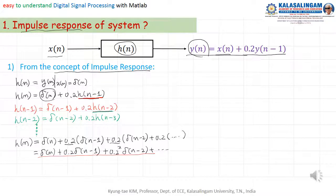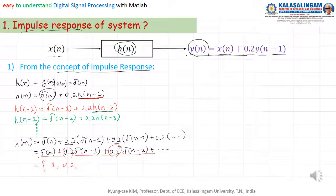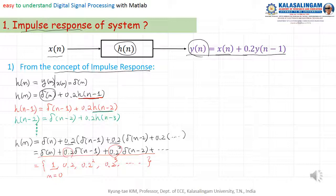We can also represent the sequence. It means: 1, 0.2, 0.2 squared, 0.2 cubed, going on like this. Like this, we can obtain the impulse response from the concept of impulse response directly.